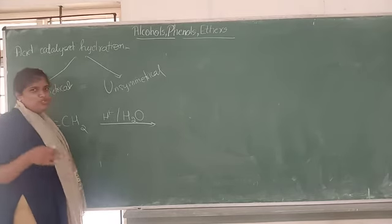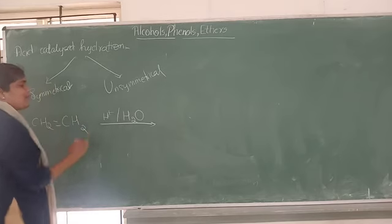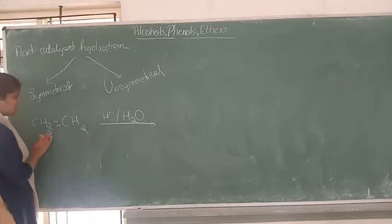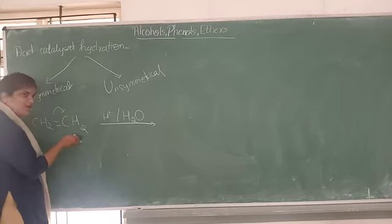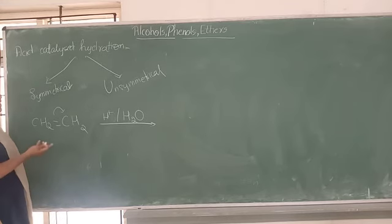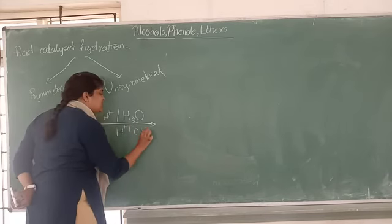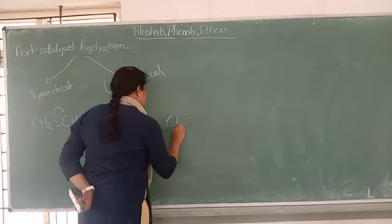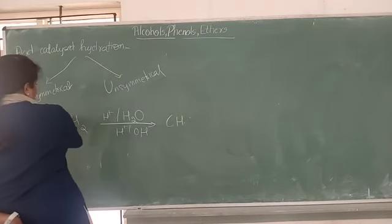Usually you can take dilute H+ or even concentrated acid, that is protons. So that results in, I am talking about this is symmetrical alkene. Bond shift, you can shift the bond either this way or this way. This is symmetrical. So here is the water molecule, H+ and OH-. Suppose I can do like this.